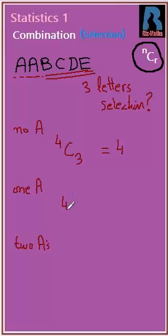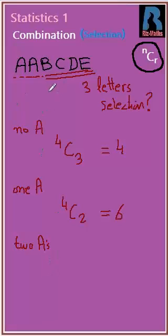With one A, we need two more letters from the four remaining letters B, C, D, E, so this will be 4C2, which equals 6. The third option is with two A's.